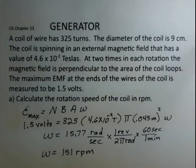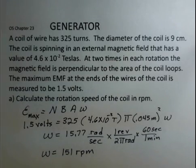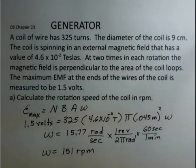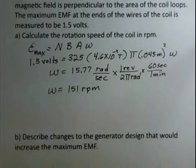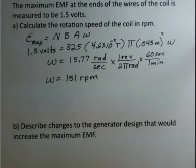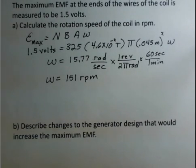151 RPMs. So that's your rotation rate in RPMs. Let's go on down here. How could we redesign this generator so we get more than 1.5 volts at a maximum?